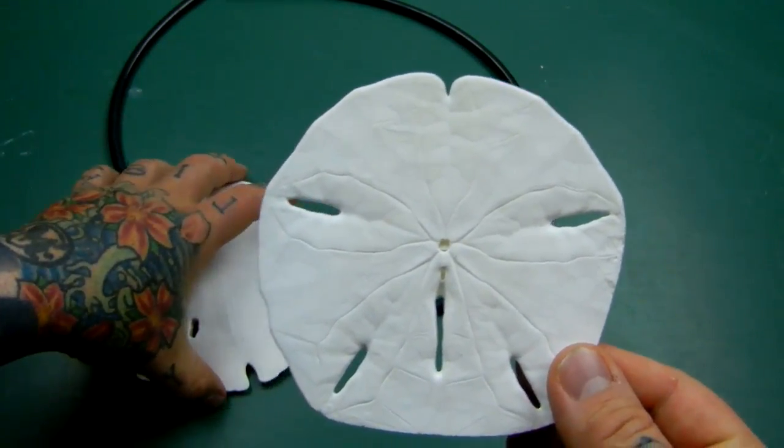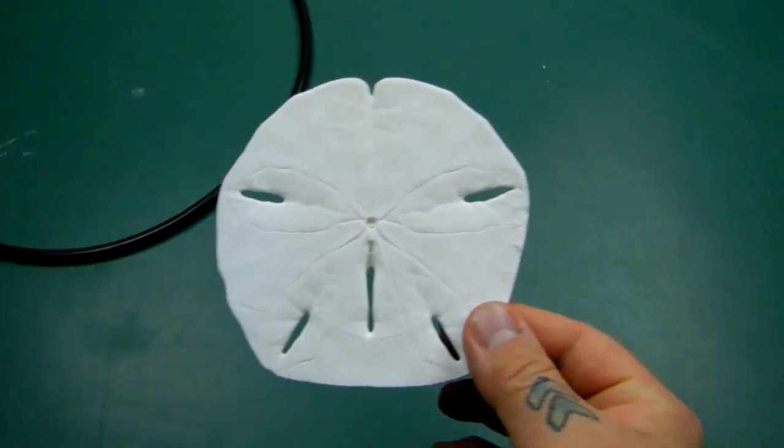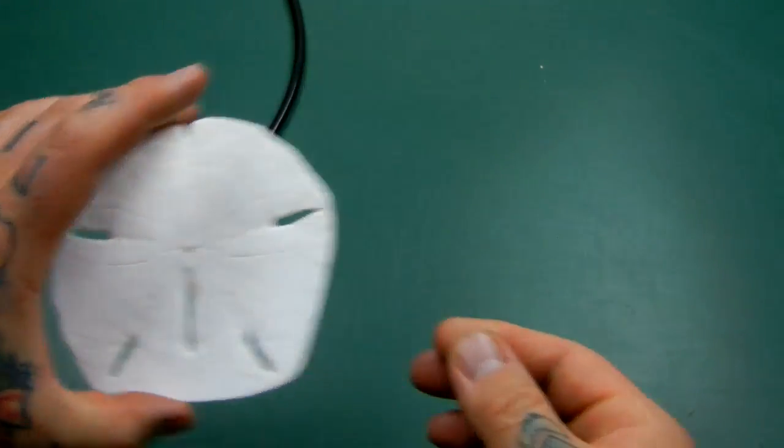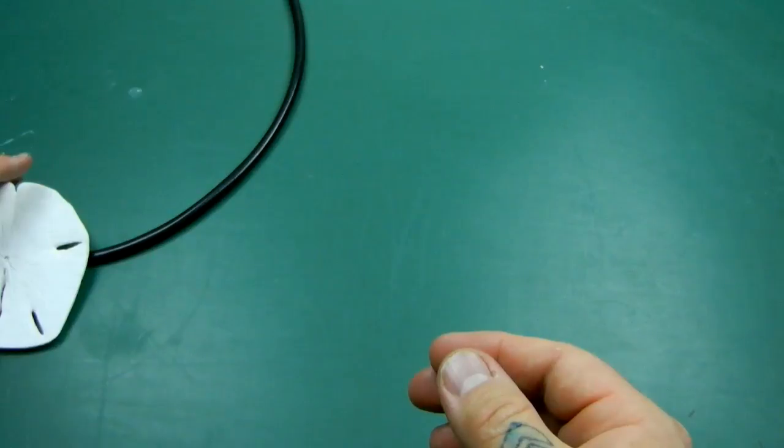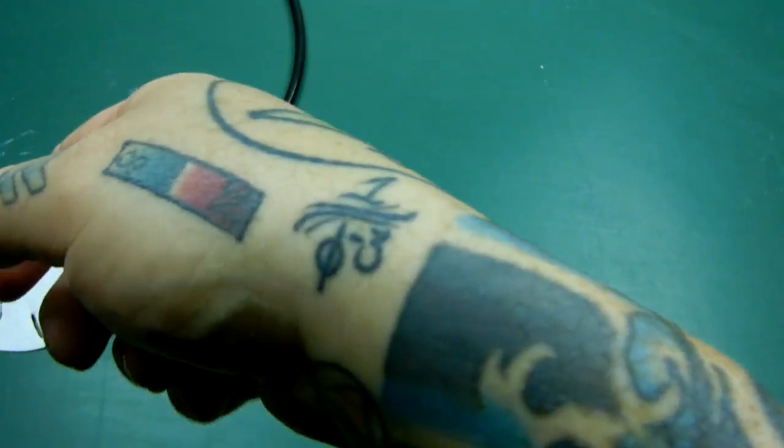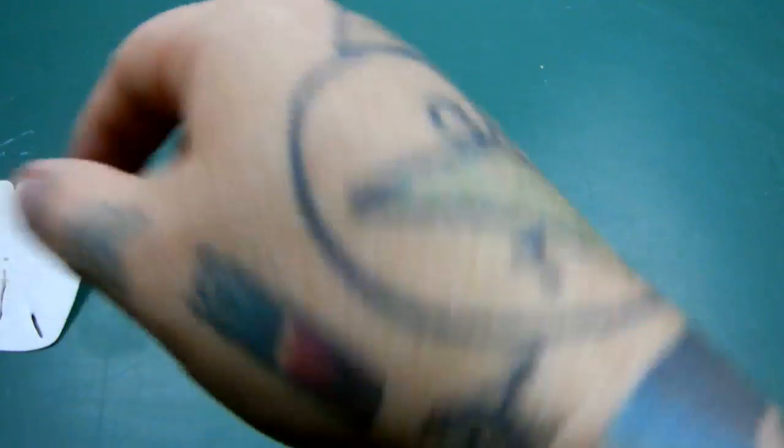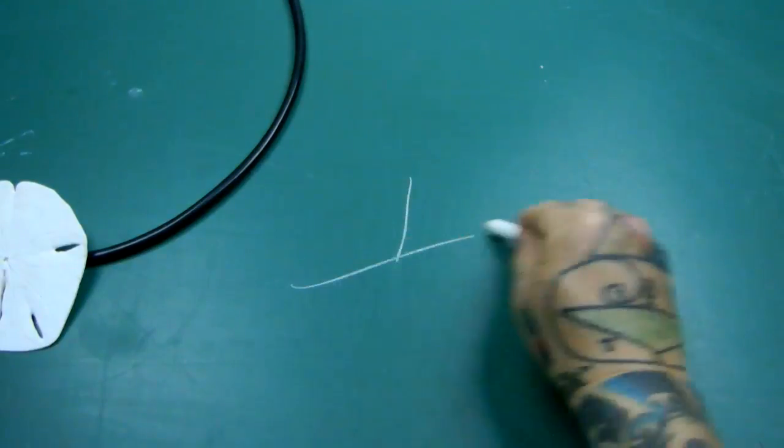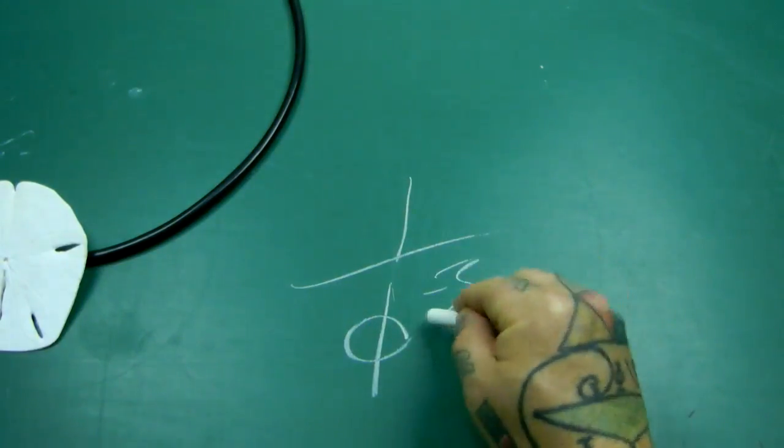The secret behind the geometry of the sand dollar, as it turns out, as I discovered, my discovery, is actually an equation. I even tattooed it on my wrist here. It's 1 over phi to the power of negative 3.